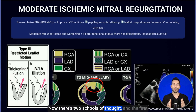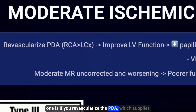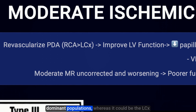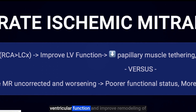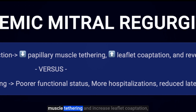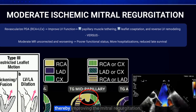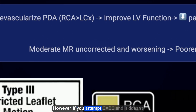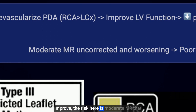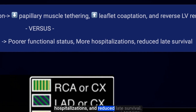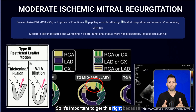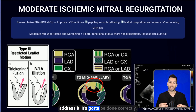There are two schools of thought. If you revascularize the PDA territory — most commonly supplied by the RCA in right-dominant populations, or the left circumflex in left-dominant populations — you can improve LV function and remodeling, decrease papillary muscle tethering, and increase leaflet coaptation, thereby improving mitral regurgitation. However, if CABG is attempted and MR doesn't improve, uncorrected moderate MR that worsens has been shown to lead to poorer functional status, more hospitalizations, and reduced late survival.